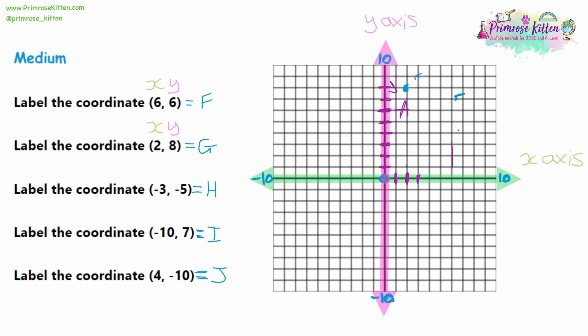Now let's look at some negative numbers. For question 3, we've got negative 3 for x — so rather than going 3 places to the right, we'll go 3 places to the left. And we have negative 5 for y, so we're going 5 downwards. Starting in the middle: 1, 2, 3 places to the left, then 1, 2, 3, 4, 5 places down. Checking the answer: 1, 2, 3 places across to the left, and H is directly underneath. Then 1, 2, 3, 4, 5 places down — H is also 5 places down. So we've got H in the correct place.